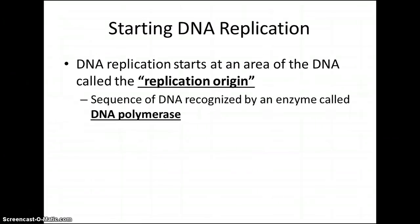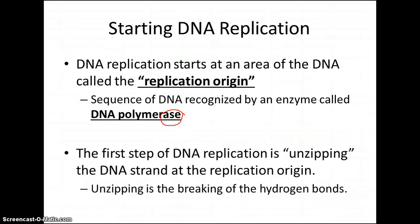Here are some things you need to know, and then we'll draw a picture. DNA replication starts at an area of the DNA called the replication origin. The replication origin is a sequence of DNA recognized by an enzyme called DNA polymerase. Remember, enzymes are proteins that speed up chemical reactions for us. It's got that word 'ase' right in it — that means it's an enzyme. The first step of DNA replication is unzipping the DNA strand at the replication origin. Unzipping is the breaking of the hydrogen bonds.